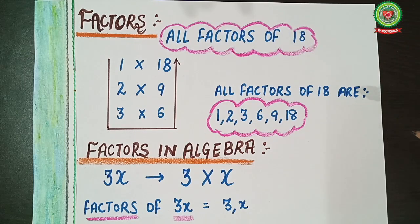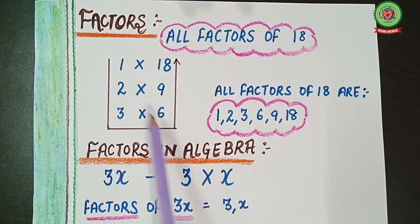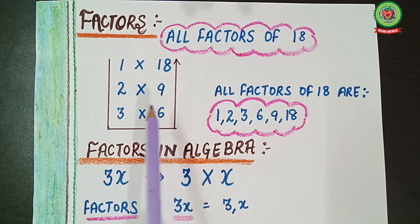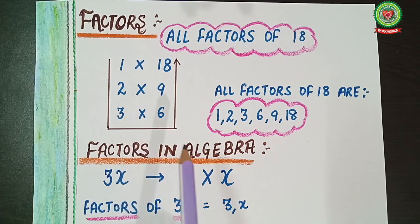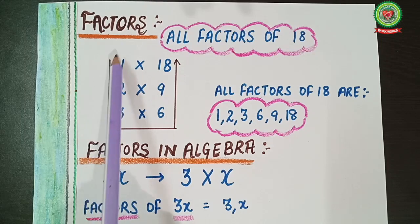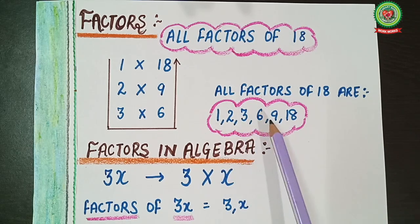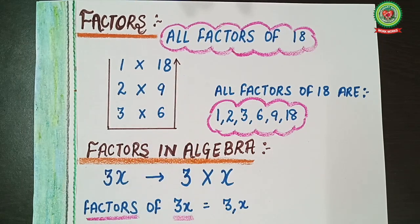We will solve this using the U-method. On the 1-times table, 18 comes on 1; on the 2-times table, it comes on 9; and on the 3-times table, it comes on 6. We will not repeat 6 because on the 6-times table it will come on 3, so it gets repeated. We take a U-turn. So all the factors of 18 are: 1, 2, 3, 6, 9, 18.